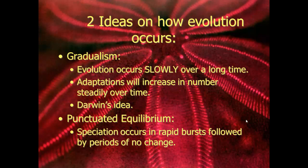There are two ideas on how evolution occurs: gradualism and punctuated equilibrium. Gradualism is when evolution occurs slowly over a long period of time — adaptations increase steadily over time. That's Darwin's idea that evolution did not happen overnight or within one generation, but over many millions of years. Punctuated equilibrium is when speciation occurs in rapid bursts followed by periods of no change — new species appear rapidly and then there is no change. These are two conflicting ideas about how evolution can occur.